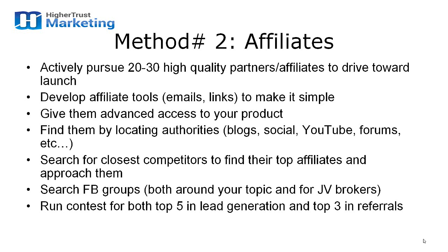Find them by locating authority figures — usually authority bloggers, authorities on social media like Facebook or Twitter, or YouTube where they produce videos. They have forums, et cetera. Then you approach them using the system we use. Search for the closest competitors: if you find other e-books, courses, training programs, or affiliate products related to yours, search that across the web and find where they're placed. You'll find many of them on affiliate sites, and you can go after those affiliates — that's fair game and a very common technique for mining top affiliates.